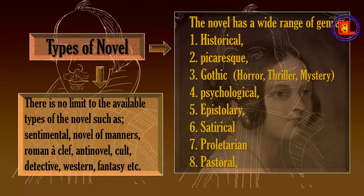Types of Novel. The novel has a wide range of genres such as historical novel, picaresque novel, gothic novel, psychological novel, epistolary novel, satirical novel, proletarian novel, and pastoral novel. But these are not the only genres — there exist more, for example: sentimental novel, novel of manners, roman à clef, anti-novel, cult novel, detective novel, western novel, fantasy, and so on. I will discuss only the major types here.